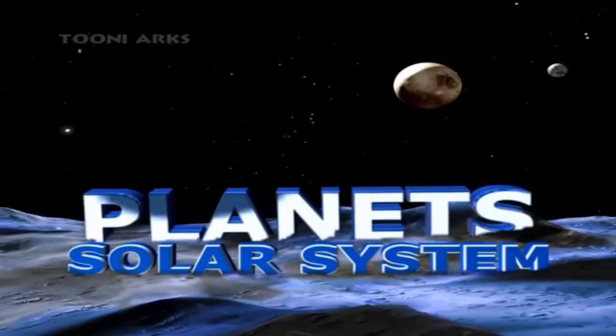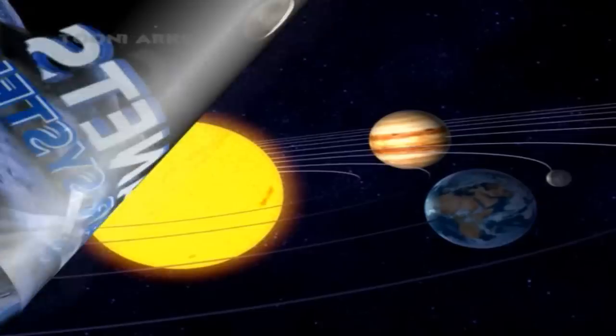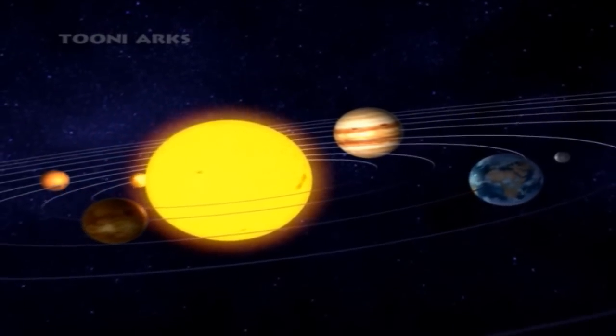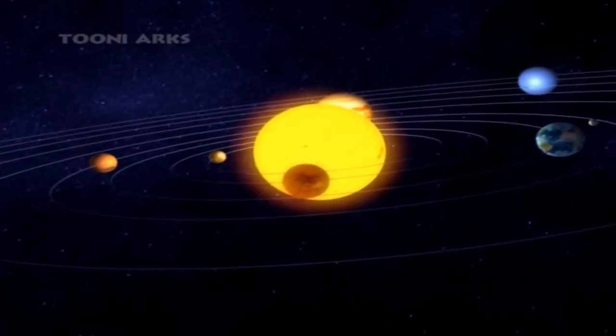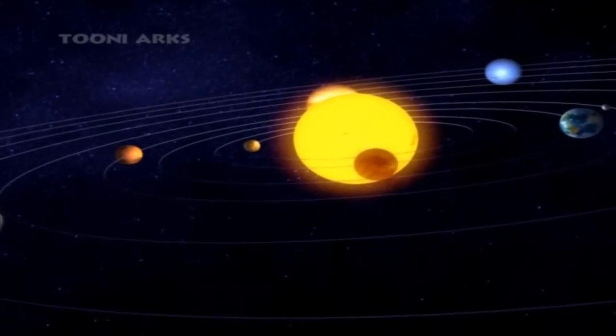We shall now see our solar system. In our solar system, we have nine planets, including the planet Earth where we dwell.